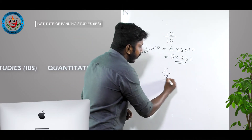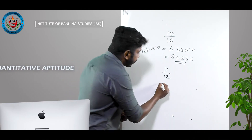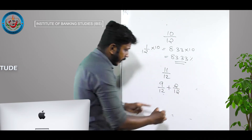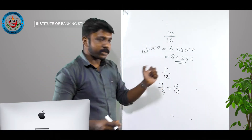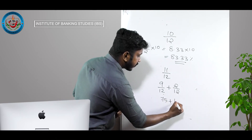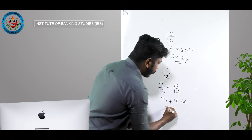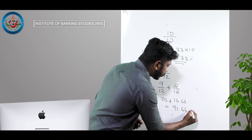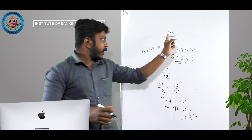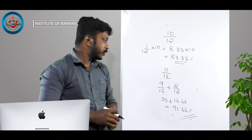11/12 — let's see. We can write it as 9/12 + 2/12. 9/12 is 75% and 2/12 is 16.66%, so 75 + 16.66 = 91.66%. So 11/12 is 91.66%.